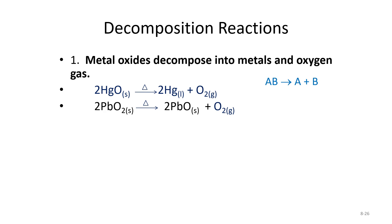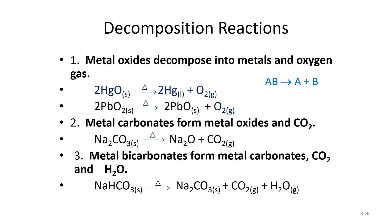For decomposition reactions, a metal oxide can decompose into metals and oxygen. For example, mercury oxide decomposes to mercury and oxygen gas, and lead oxide decomposes to lead plus oxygen. The main thing to look for is that there is one reactant breaking down into multiple products.